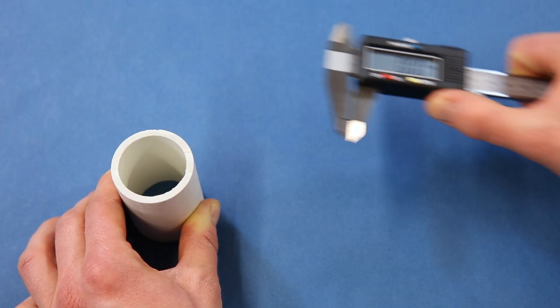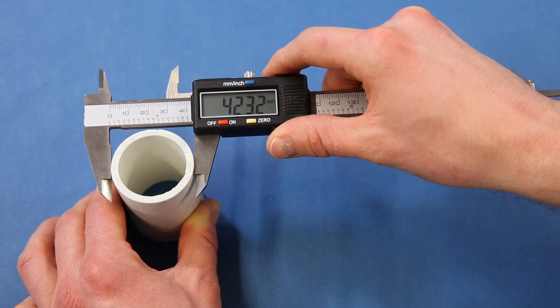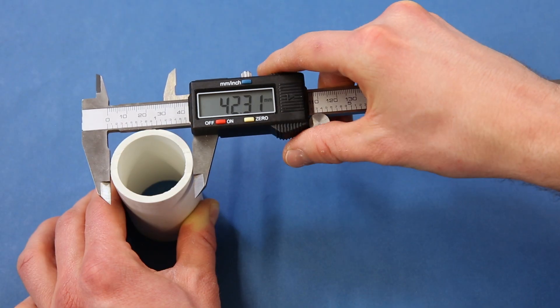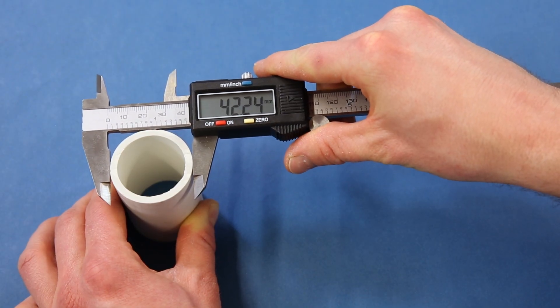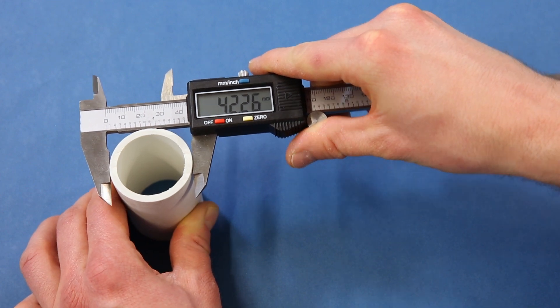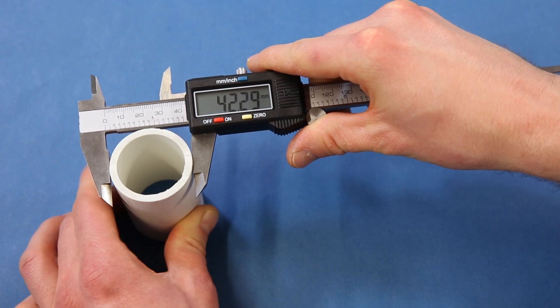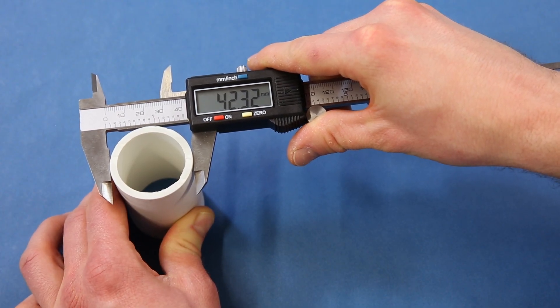Modern slide calipers generally have two sets of jaws and a depth rod. To measure an object like this piece of PVC pipe, close the outside jaws around the points you want to measure. It can help to wiggle the object or move it back and forth while gently applying pressure to the slider to get the minimum measurement of the longest distance on the part you want to measure.